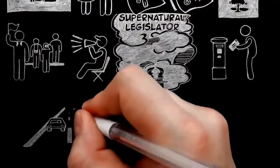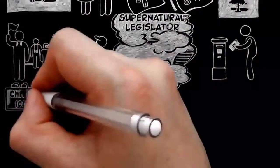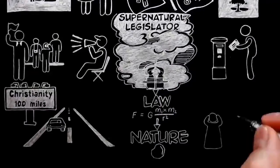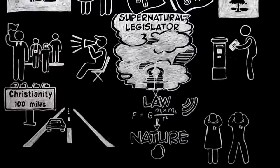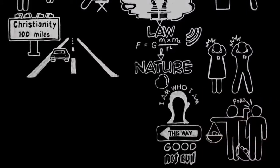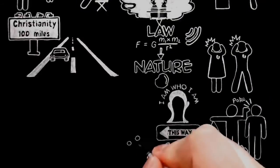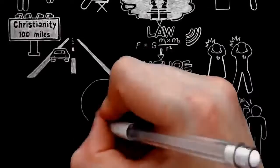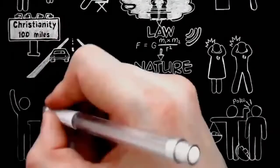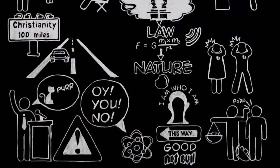Do not think I am going faster than I really am. I am not yet within a hundred miles of the God of Christian theology. All I have got to is a something which is directing the universe and which appears in me as a law urging me to do right and making me feel responsible and uncomfortable when I do wrong. I think we have to assume it is more like a mind than it is like anything else we know, because, after all, the only other thing we know is matter, and you can hardly imagine a bit of matter giving instructions. But, of course, it need not be very like a mind, still less like a person. In the next talk, we shall see if we can find out anything more about it. But one word of warning. There has been a great deal of soft soap talked about God for the last hundred years. That is not what I am offering. You can cut all that out.